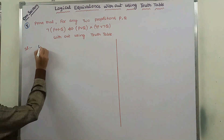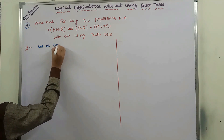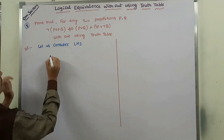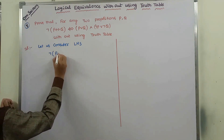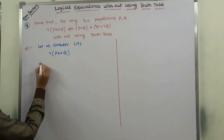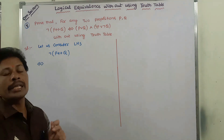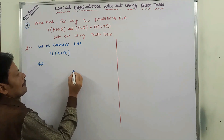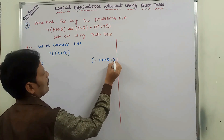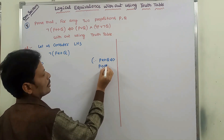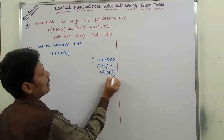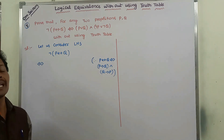Let us consider the LHS part. The LHS part is negation of P biconditional Q. We already know the formula for P biconditional Q: P biconditional Q is logically equivalent to P conditional Q and Q conditional P. We have to use this formula in place of P biconditional Q.